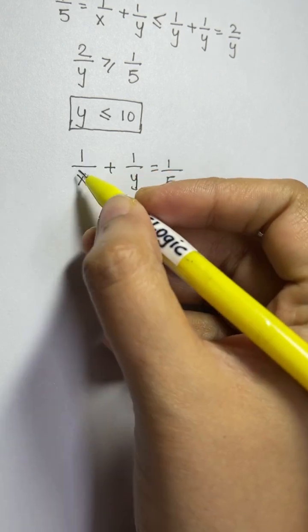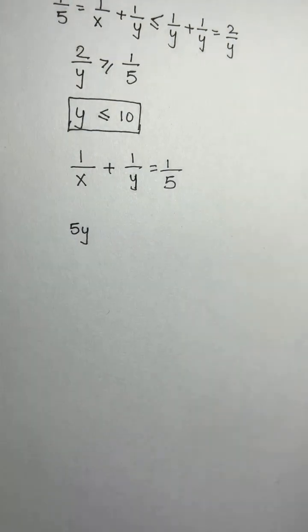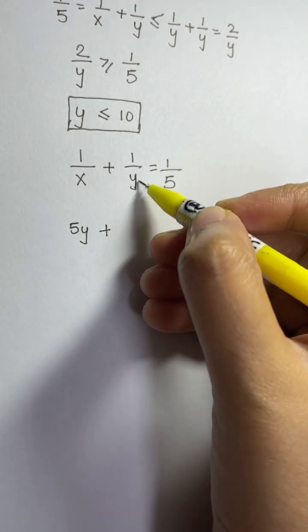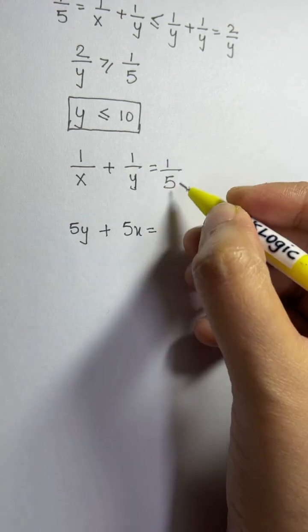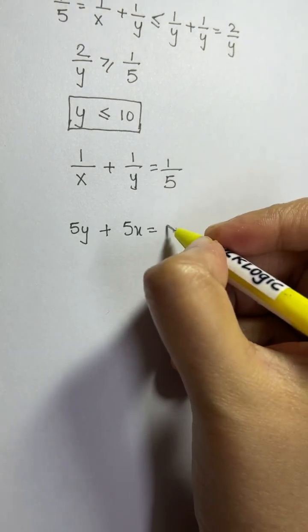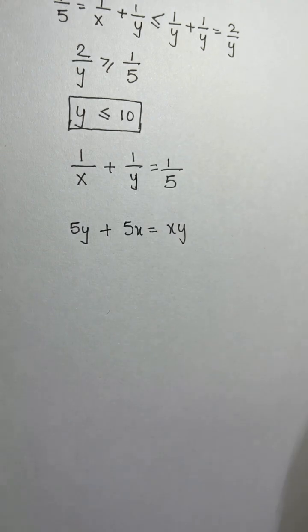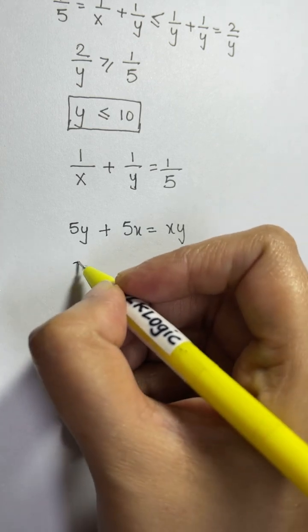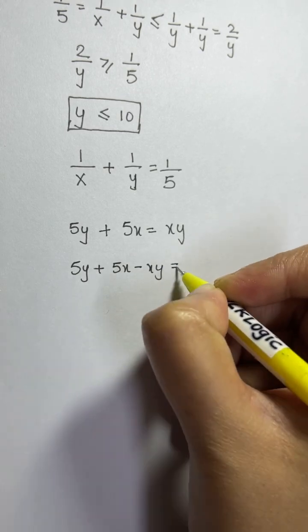Multiplying through by 5xy gives: 5y + 5x = xy. Bringing xy to the other side: 5y + 5x − xy = 0.